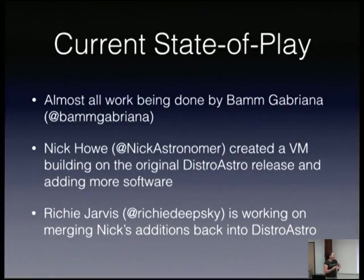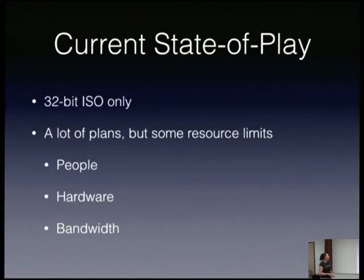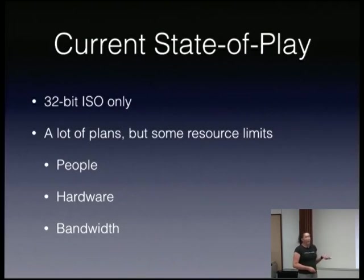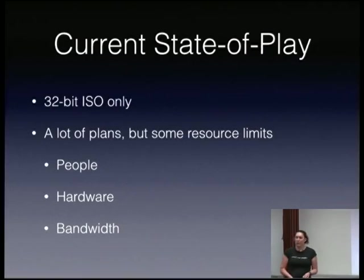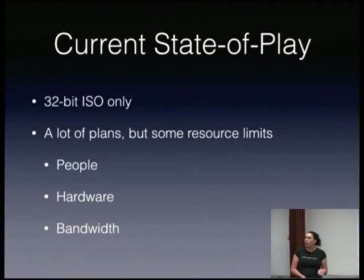At the moment it's only a 32-bit ISO, largely because Bam doesn't actually have 64-bit hardware to build on. There are a lot of plans to clean it up and make it more useful, but the limitations are people, hardware, and bandwidth. Bandwidth is an issue for hosting the ISOs themselves. Most of the time people will be torrenting it, but we'll also need people to seed the torrent.